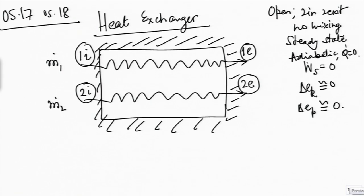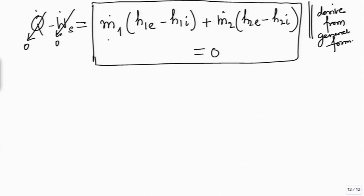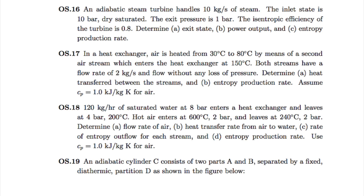Inside the heat exchanger there is an exchange of energy in the form of heat between the two fluids. As you notice, since m_dot_1 and m_dot_2 are both positive, one enthalpy difference will be positive and one will be negative, depending on which is the hotter fluid and which is the cooler fluid. In OS 18, 120 kg per hour of saturated water at 8 bar enters the heat exchanger and leaves at 4 bar 200 degrees C.